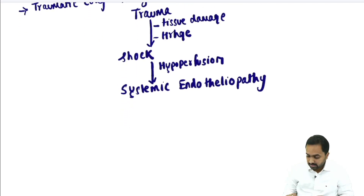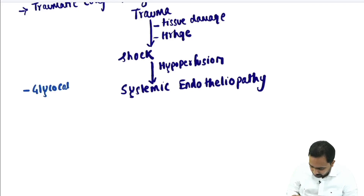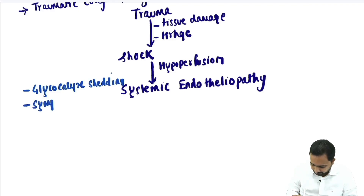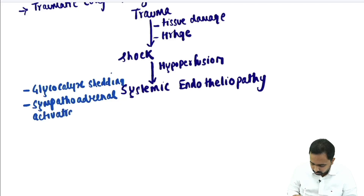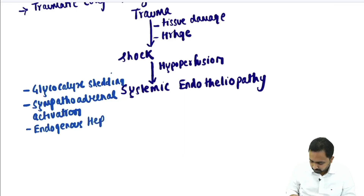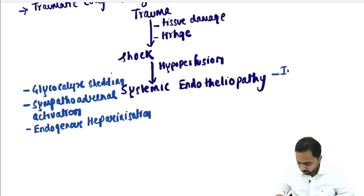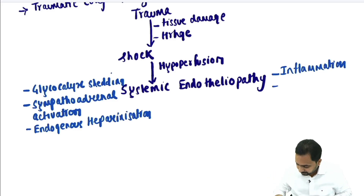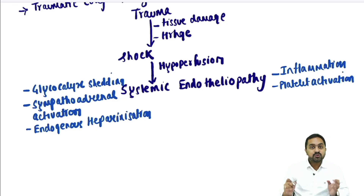What exactly happens in systemic endotheliopathy? There will be glycocalyx shedding, sympatho-adrenal activation, endogenous heparinization, inflammation, platelet activation, and reduced clotting factor activity.